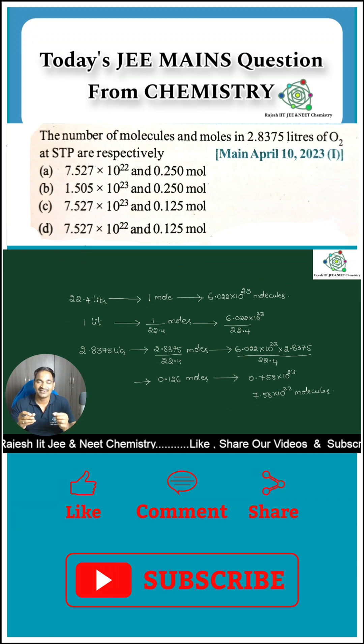In this question they are asking about 2.8375 liters of oxygen contains how many number of moles and number of molecules. Very simple, you know very well at STP 22.4 liters any gas occupies, that means one mole it contains, and number of molecules is equal to Avogadro's number, that means 6.022 into 10 to the power 23.